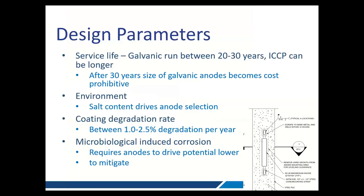When looking at design parameters, service life for galvanic anodes can be between 20 to 30 years depending on the anodes; ICCP could be longer but monitoring and maintenance is important. Different anodes are used in different environments, and whether structures are coated or not has a big influence on the size and scope of your cathodic protection system. Something many people are now dealing with is microbiologically induced corrosion — micro sulfite-eating microbes in mud and water that will cause corrosion. If you have those, you have to drive cathodic protection much harder to protect those structures, but it is possible to use cathodic protection to mitigate it by adjusting system parameters.